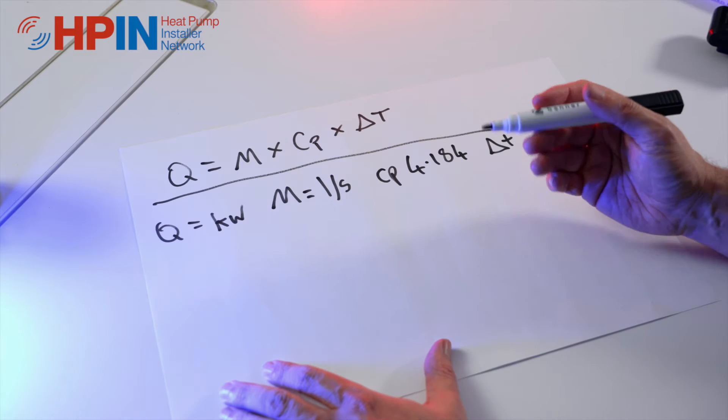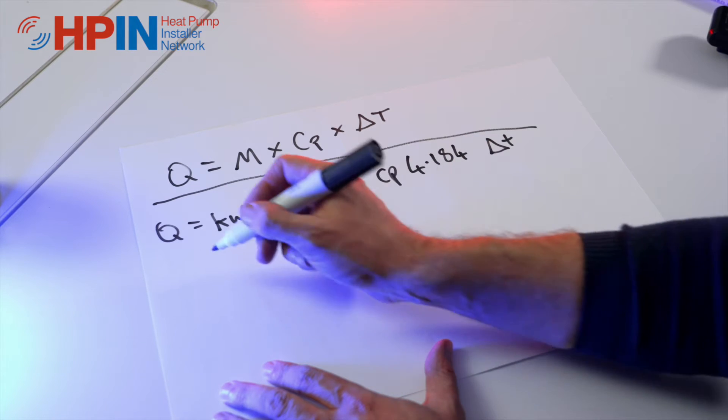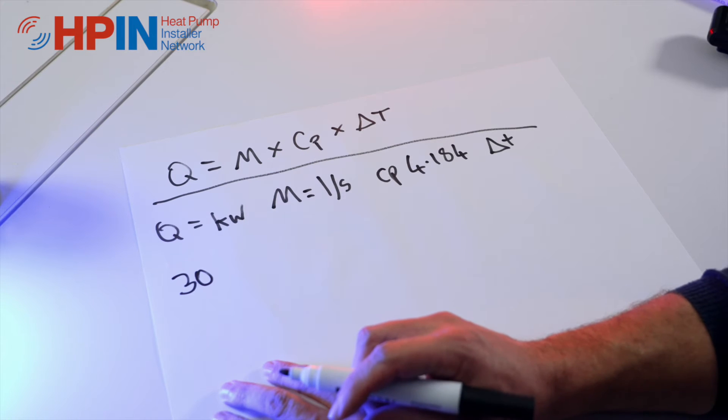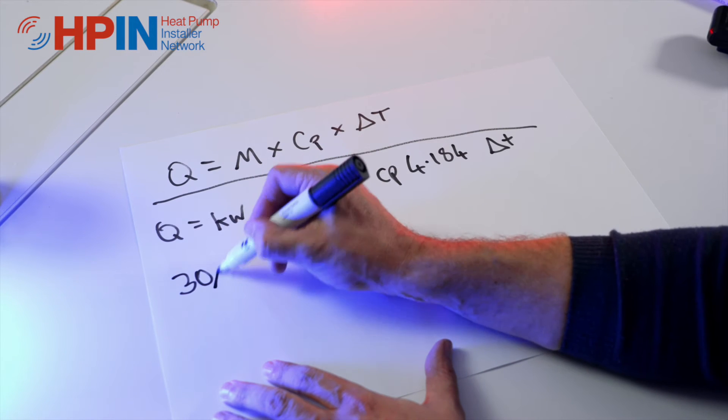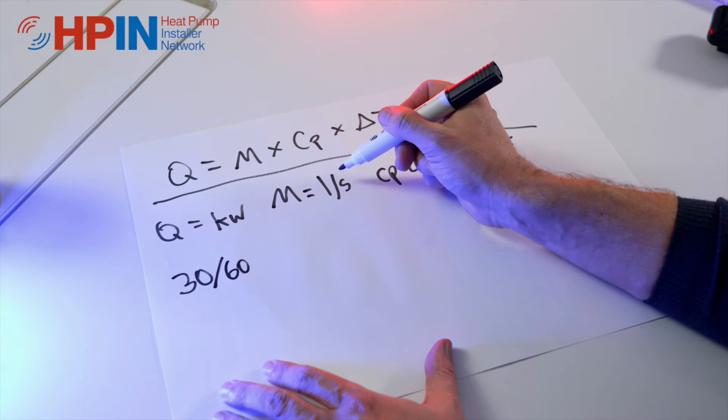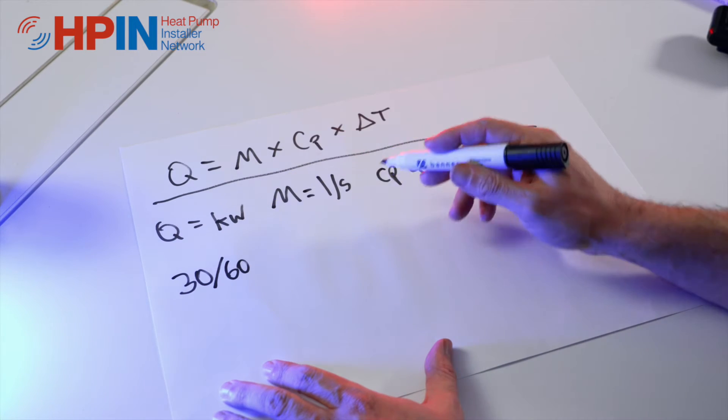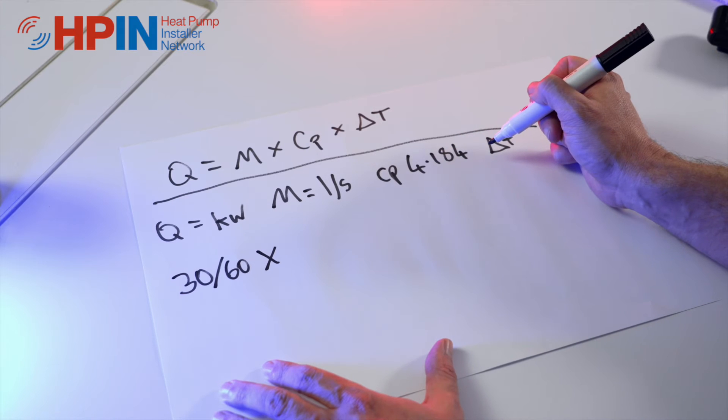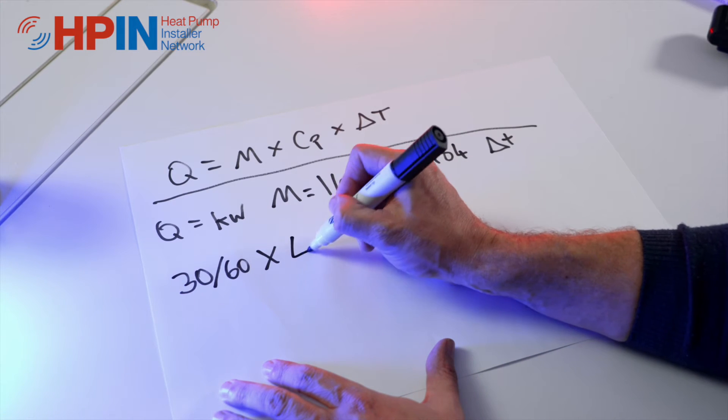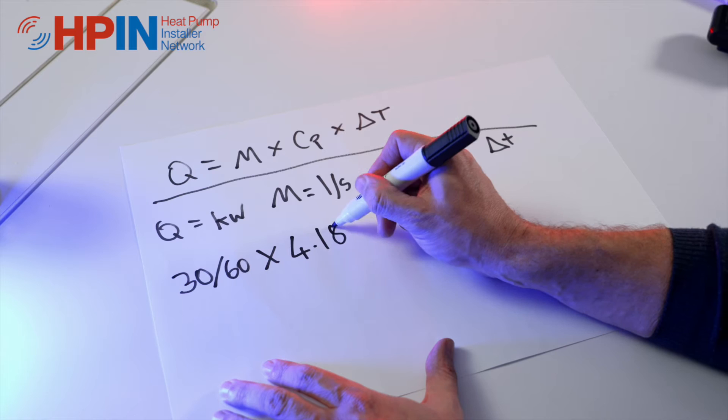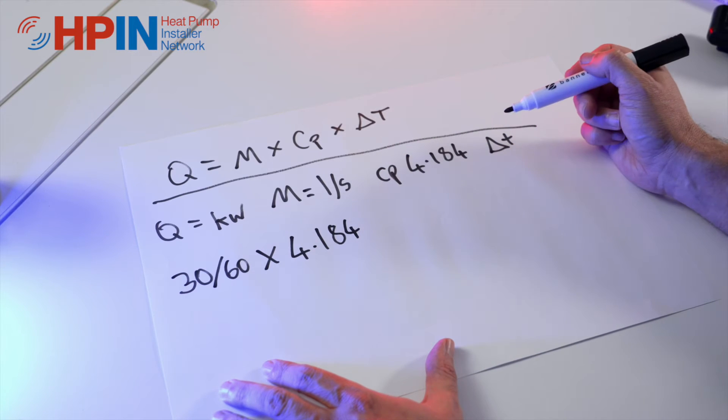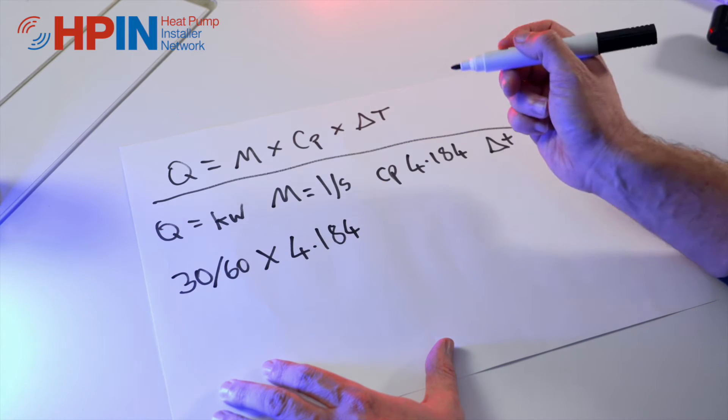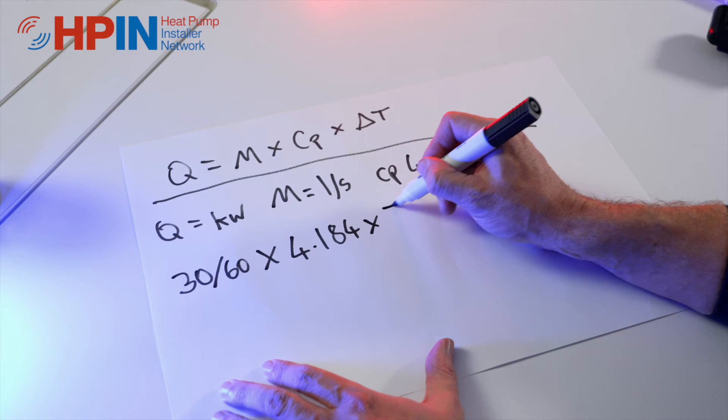To work this out and to show how important flow rates are, let's start with a 30 litre per minute flow rate. We're going to divide that by 60 because we want litres per second to make this equation work. We're going to times that by our specific heat capacity of water, 4.184. And then for this demonstration, let's say we're using underfloor heating and we've got a delta T of 5 degrees.